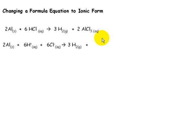The AlCl3 is aqueous, so we must dissociate that. We have 2 aluminum ions with a plus 3 charge. Because this is aqueous, they are also aqueous.